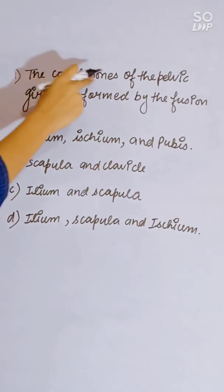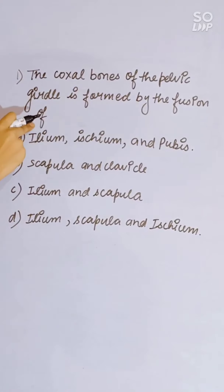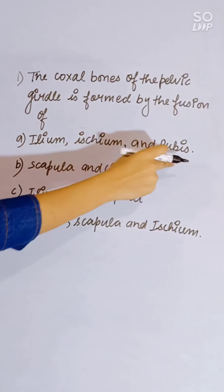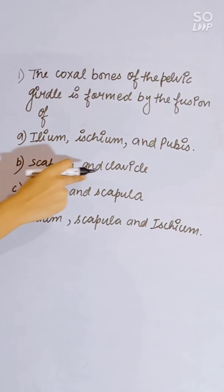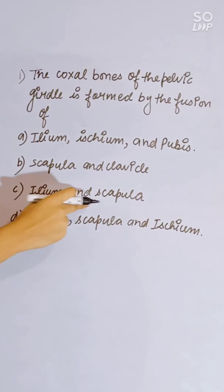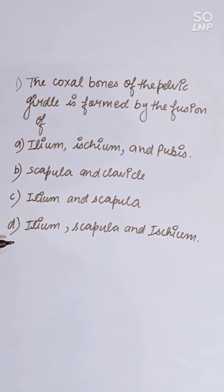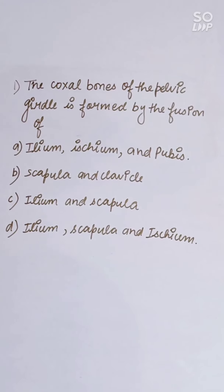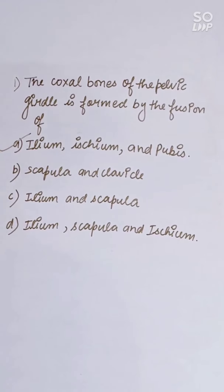The coxal bone of the pelvic girdle is formed by the fusion of: ileum, ischium and pubis; scapula and clavicle; ileum and scapula; or ileum, scapula and ischium. Correct answer is A — ileum, ischium and pubis.